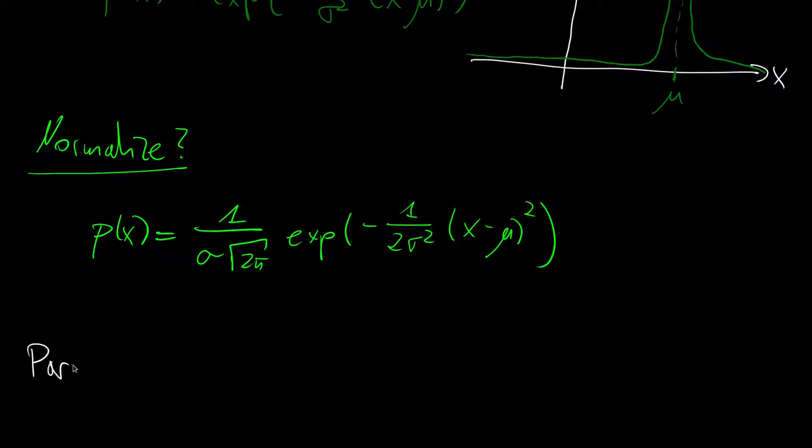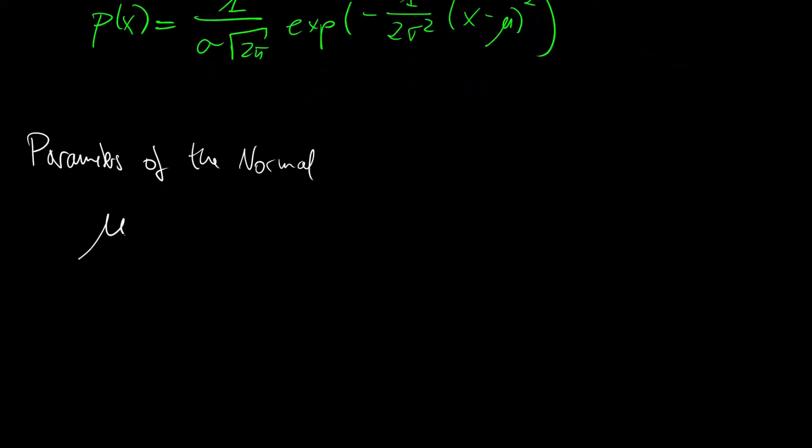Let us quickly note down the parameters of the normal or the Gaussian. And for this we have first the mu which is the mean or the center sometimes also called position. And we have the sigma which is the standard deviation sometimes also called scale.